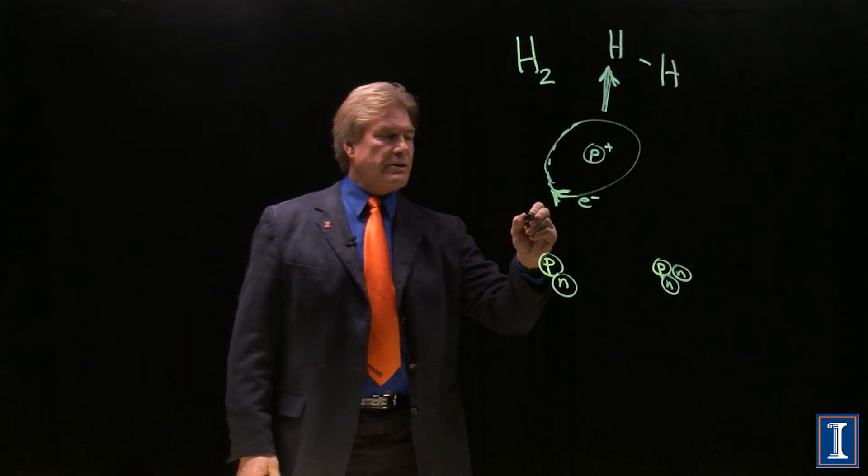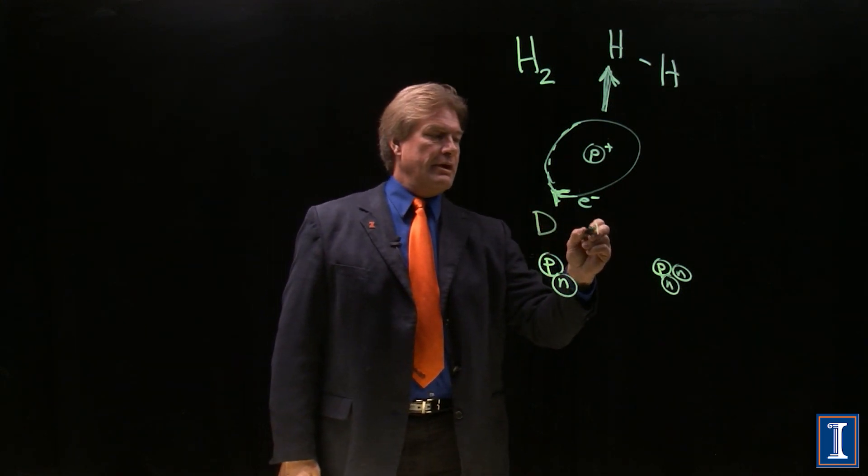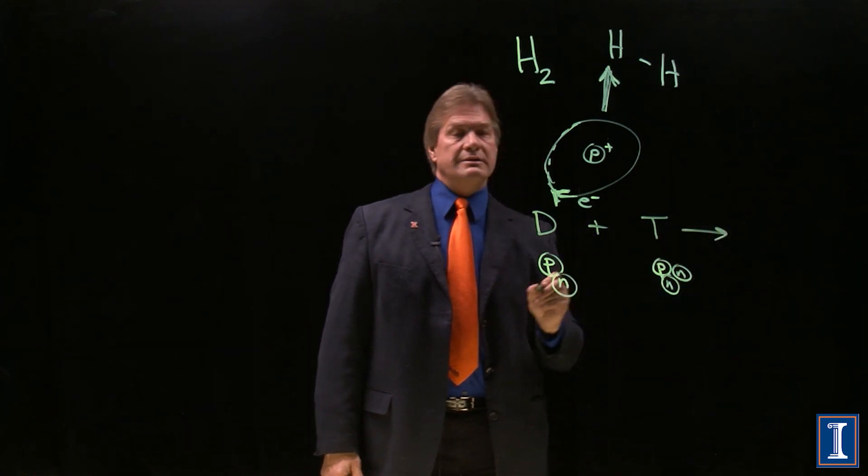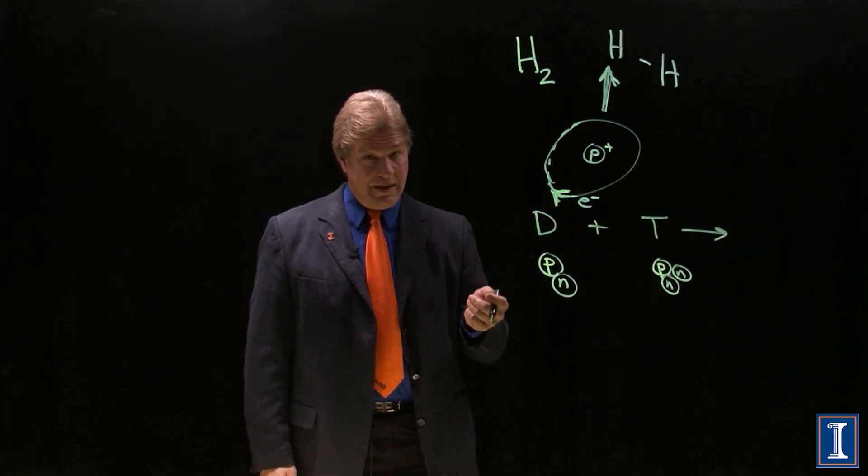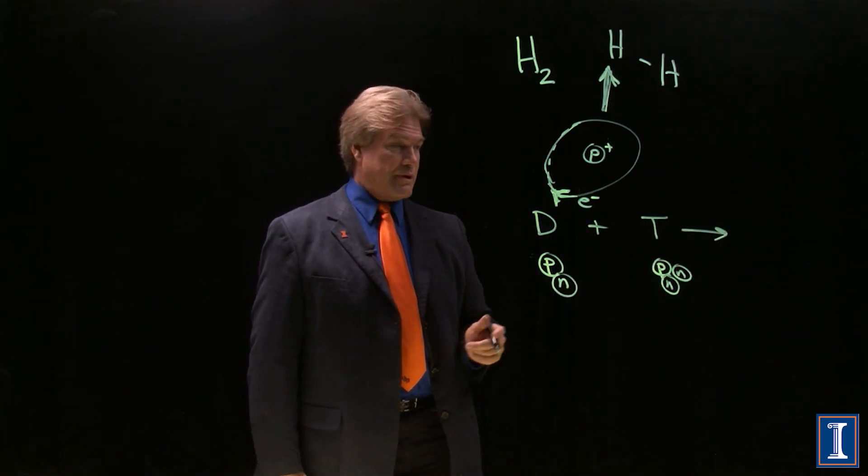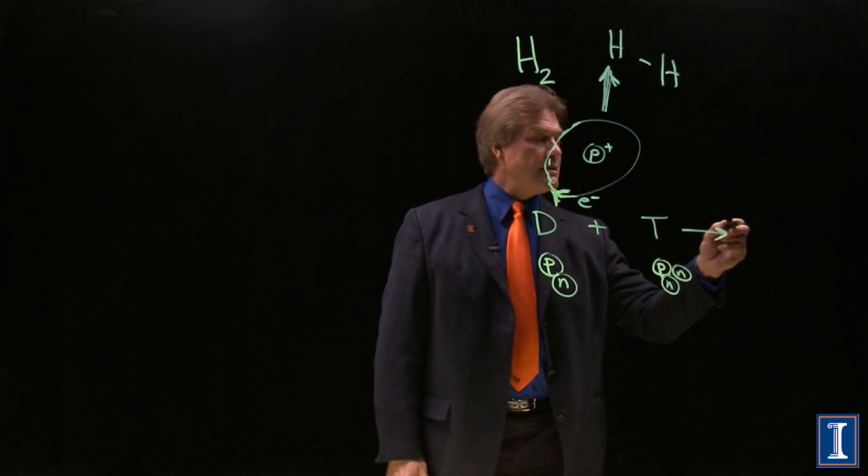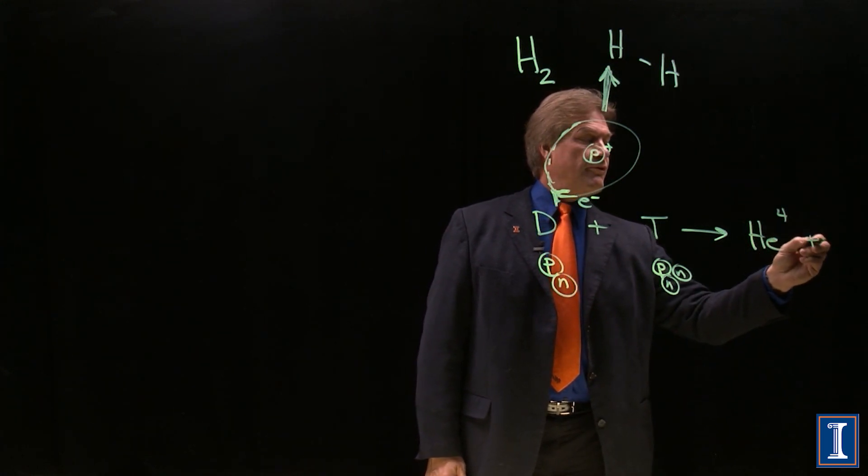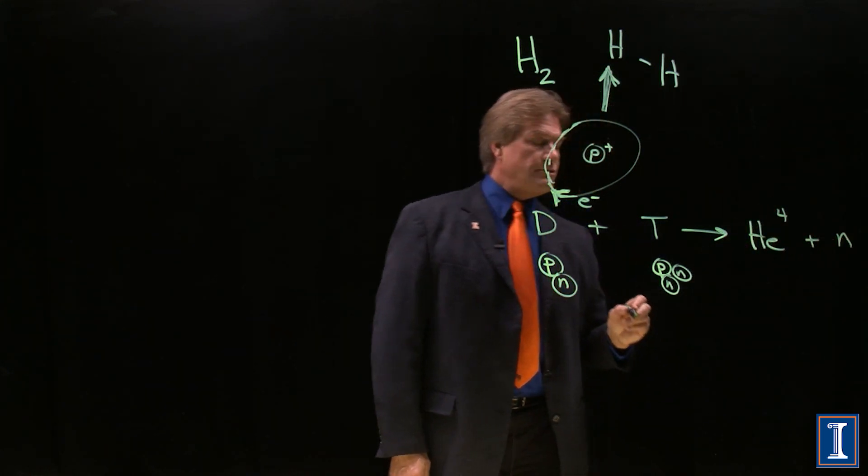So if I call this D for deuterium, and T for tritium, I can combine this. And here I need a lot more than that little spark from my flash powder. But I could combine this, and I could make helium, the normal isotope of it, helium-4, and an extra neutron.